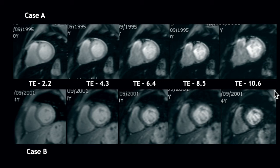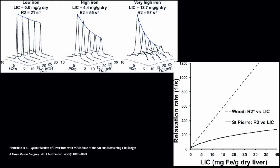This visual comparison is called qualitative assessment. For quantitative assessment, as TE time increases the signal intensity decreases. Looking at three conditions — mild, moderate, and very severe iron overload — the graph of decreasing myocardial signal intensity becomes steeper as the iron overload content increases. By determining the slope of this graph, we can actually quantify the iron overload in that particular tissue.